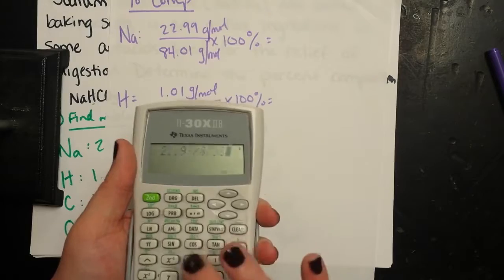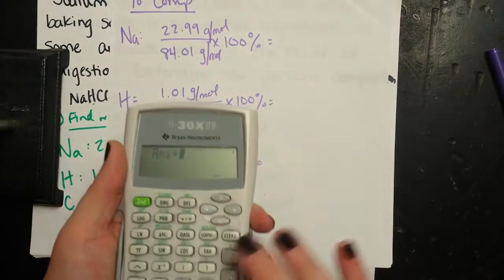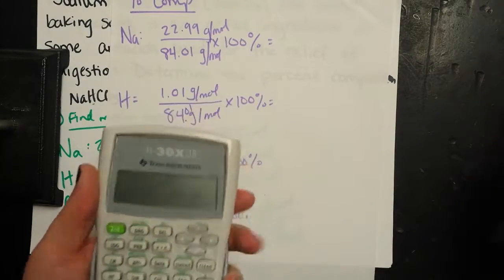I'm going to find the percentage of each element. So I'm going to take the 22.99 and divide it by 84.01, and then multiply it by 100.